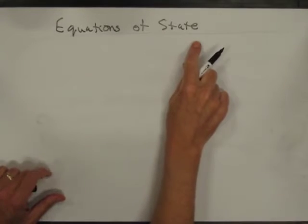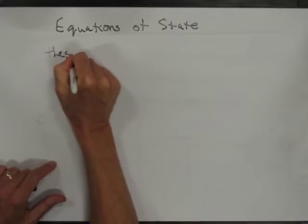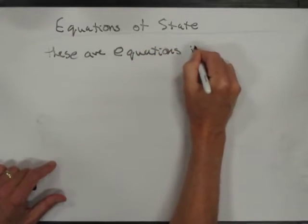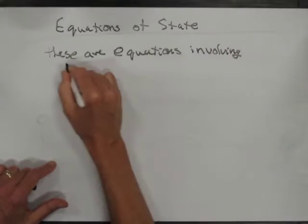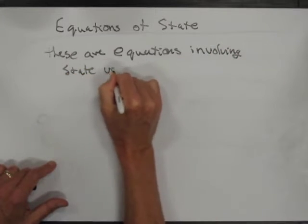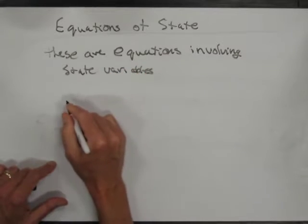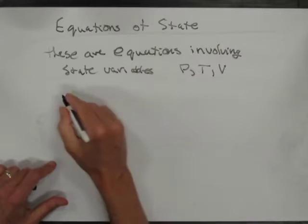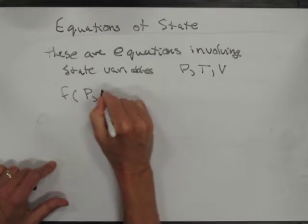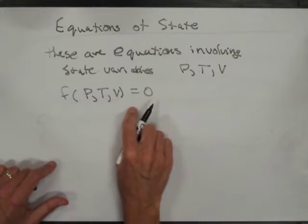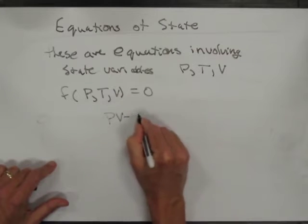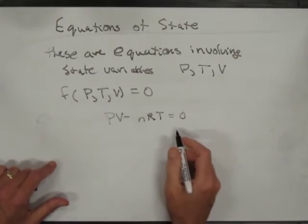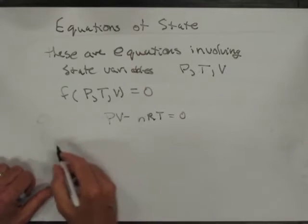We'll talk about equations of state in thermodynamics. These are equations involving state variables — it could be the pressure, the temperature, the volume. You can write some function of pressure, temperature, and volume equals zero, and that would be an equation of state. The ideal gas law, PV minus nRT equals zero, is a state equation.